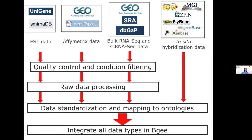In BG we take gene expression from a diversity of sources: ESTs, which is a very old-fashioned way; Affymetrix microarrays, the main method 10 years ago; bulk RNA-seq, the main method for the last 10 years; and increasingly single-cell RNA-seq. We also include in-situ hybridization data — very precise data curated by model organism databases such as MGI for mouse, ZFIN for zebrafish, FlyBase for Drosophila — and we recover it in agreement with them.